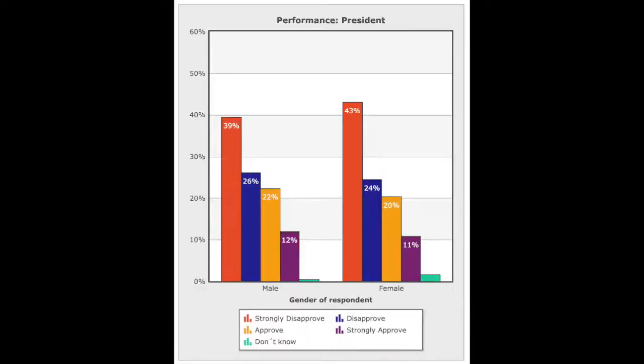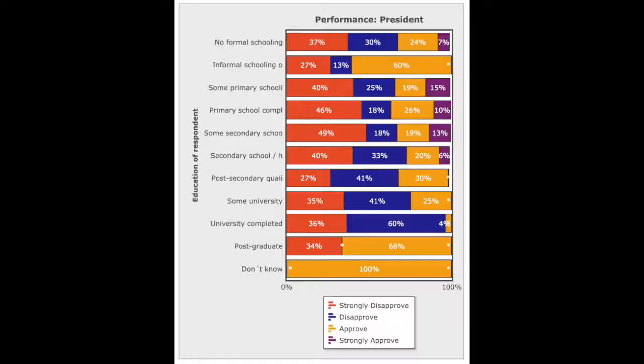Here it's going to show you male and female results. What we notice is that females have an even more negative belief in his ability to perform his job — females are harsher against him than males. We can add another filter: we could look at education. The expectation is the more educated you are, the more likely you are to be informed about government and how it functions, and therefore the more likely to hold a negative opinion of your leaders. Strongly approve is purple, strongly disapprove is orange. If we go to university completed, strongly disapprove and disapprove is overwhelmingly the majority.